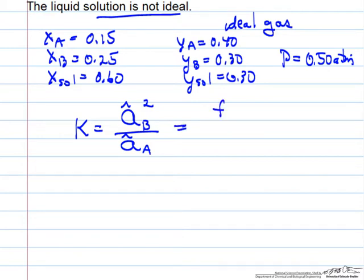The activity is the ratio of fugacity. So this is the fugacity of B in the gas phase or liquid phase, since they're the same.